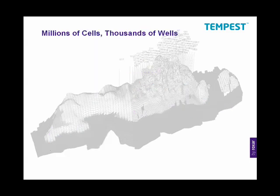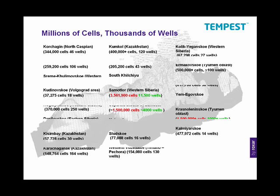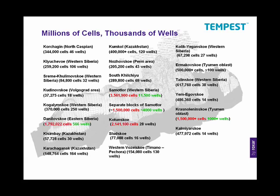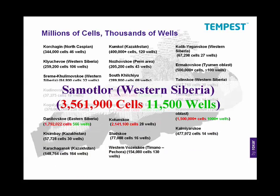With Tempest More's extended processing capabilities and speeds, it has proven itself on large fields with millions of cells and thousands of wells. Here are some of the fields that have been simulated in the CIS region using Tempest More. Most notably, we have the Samatlaw field located in western Siberia, where over 3.5 million cells and 11,500 wells were simulated.